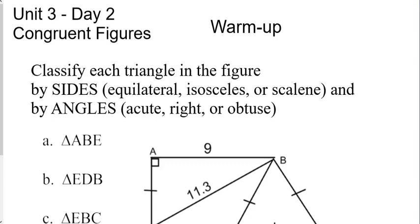All right, day two, congruent figures. We're going to classify each triangle in the figure by its sides: equilateral, isosceles, or scalene, and by the angles: acute, right, or obtuse.